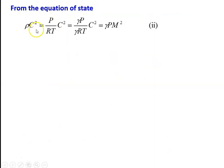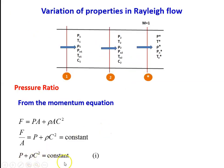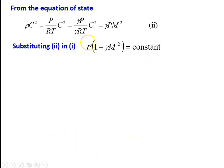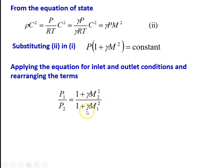From the equation of state ρ = P/RT, and substituting C² with Mach number relations: ρC² = γPM² (since γRT = a² and C²/a² = M²). Substituting into the momentum equation gives P(1 + γM²) = constant. Applying this for inlet and outlet conditions and rearranging: P1/P2 = (1 + γM2²) / (1 + γM1²). So the pressure ratio equals (1 + γM2²) / (1 + γM1²).